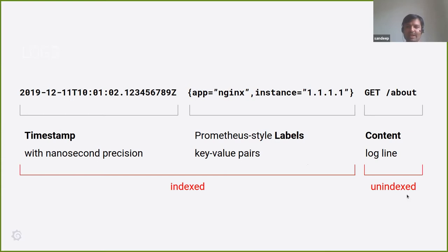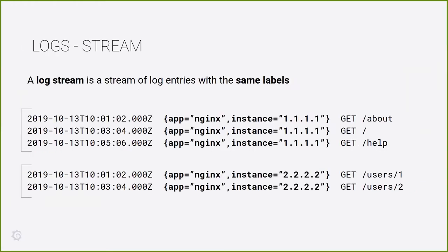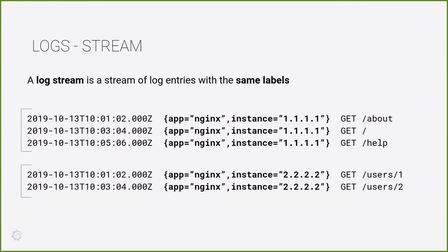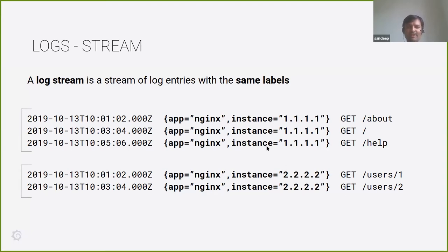Logs coming from the same application are called a stream. So all the logs from the same application would be called a single stream. Here you can see there are two streams: the first one is app nginx with instance 1.1.1.1, and the next is app nginx with instance 2.2.2.2. Logs from the same stream are stored together so that queries run faster.